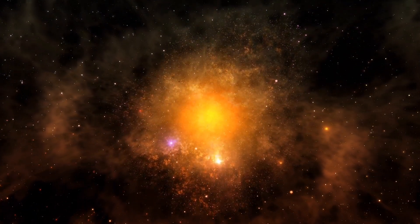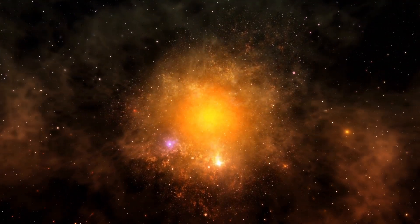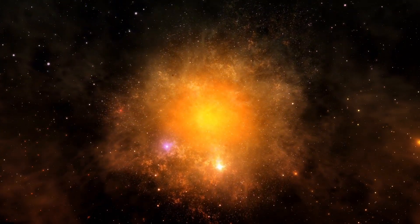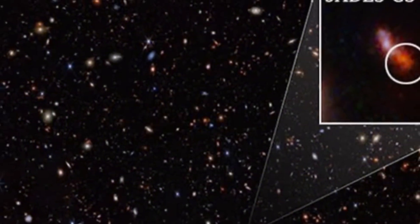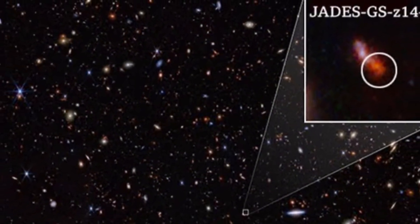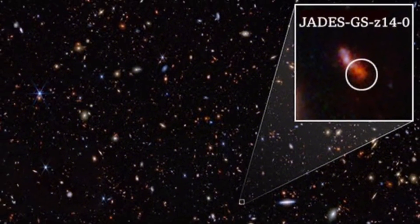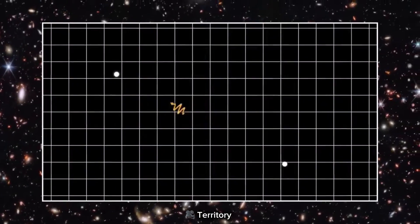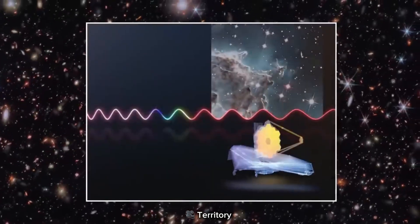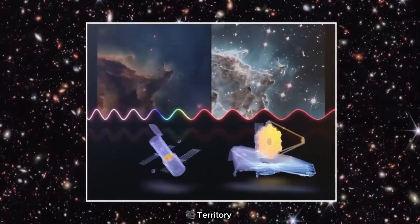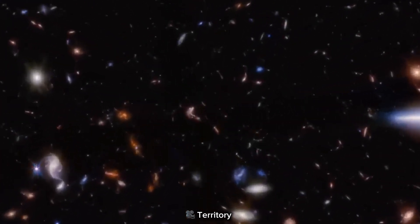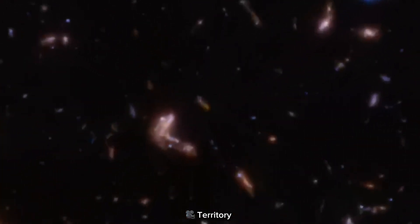In MOMZ 14's case, its redshift of 14.44 means we are looking at light that has traveled over 13.5 billion years. For comparison, the previous record holder, Jade's GSC 14-0, had a redshift of 14.32. This subtle numerical difference translates to a significantly earlier period in the universe's history. MOMZ 14 likely formed just 280 million years after the Big Bang when the cosmos was a mere 2% of its current age.